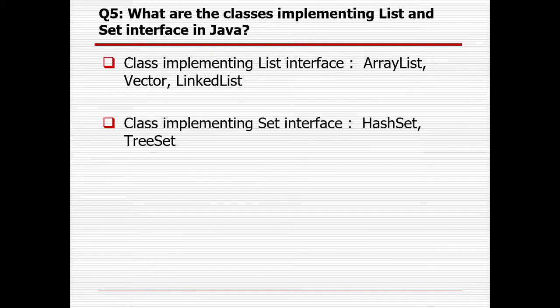What are the classes implementing the list and set interfaces? ArrayList, Vector, and LinkedList are the classes implementing the list interface, whereas HashSet and TreeSet are classes implementing the set interface.